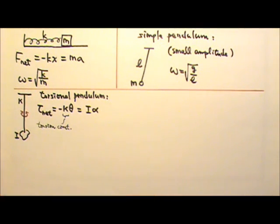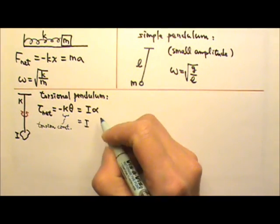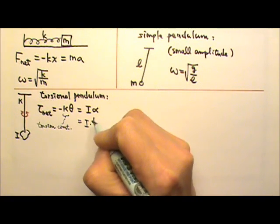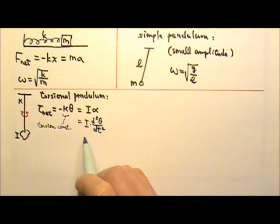Then we can replace the alpha with the second derivative of theta. And there we have the differential equation.